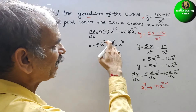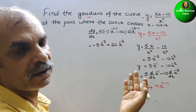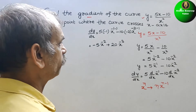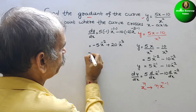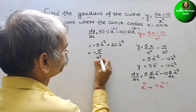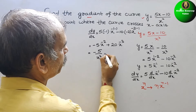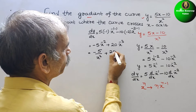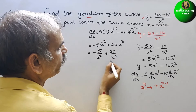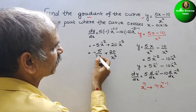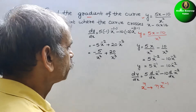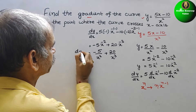Now bring the negative powers to the denominator. It will be positive now. So we will get dy by dx equals minus 5 by x squared plus 20 by x cubed. So we can bring this together. This is your dy by dx.